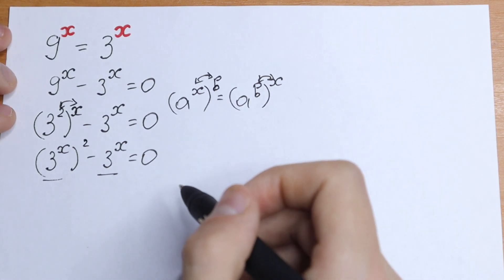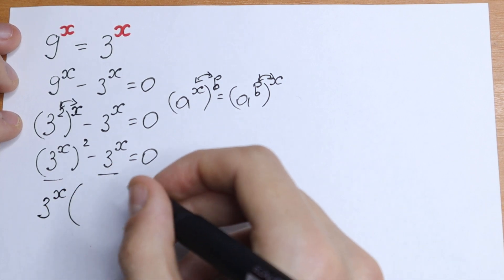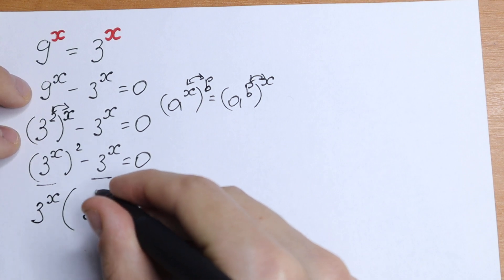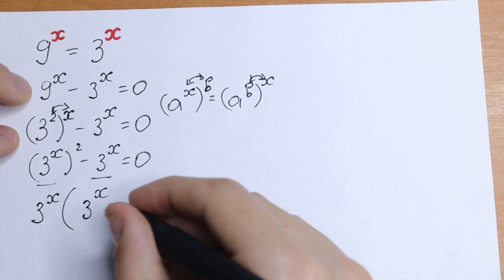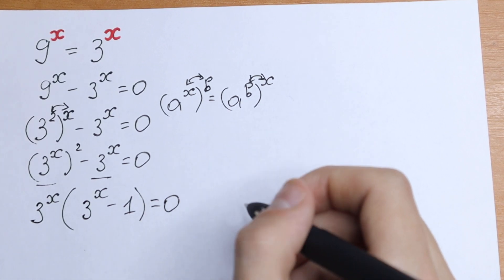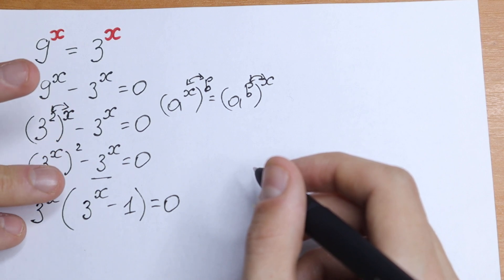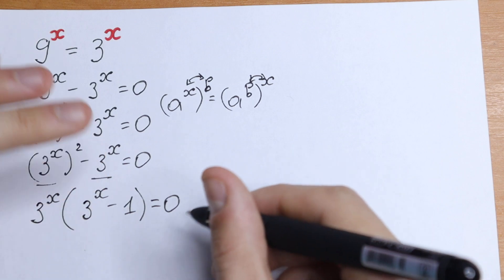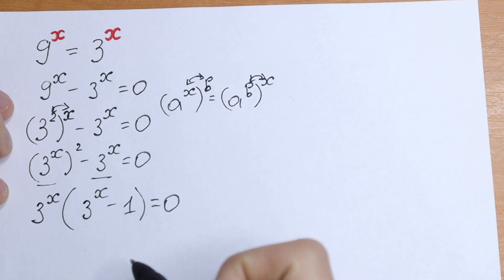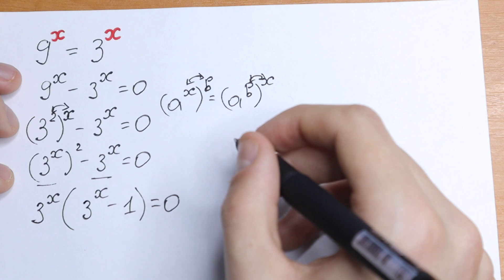So we can factor out 3 to the power x. Let's do this: 3 to the power x, and in parentheses we will have only one 3 to the power x. And if we factor out 3 to the power x from the second term, we will have only 1, so we get 3 to the power x times (3 to the power x minus 1) equal to 0. We have a product equal to 0 — one number times another number equal to 0.